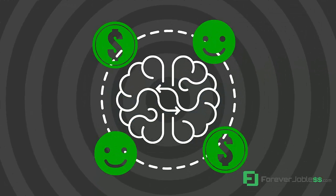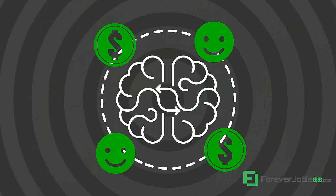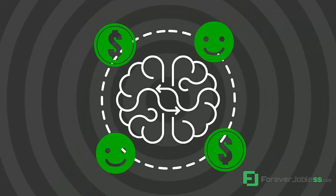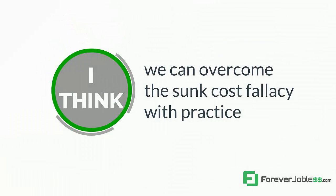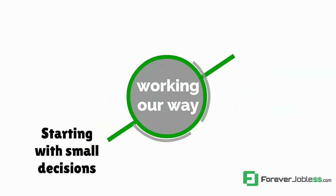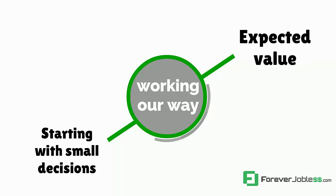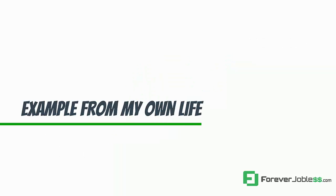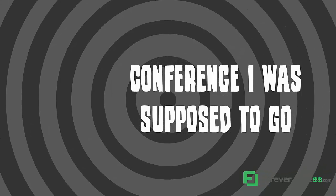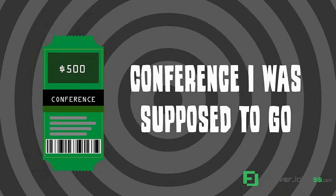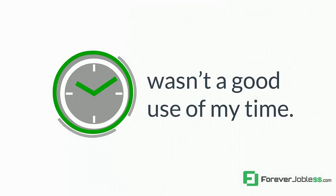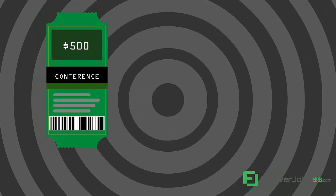It's pretty mind-boggling that we're wired in a way to make suboptimal decisions even when we know exactly what we want. I think we can overcome the sunk cost fallacy with practice, starting with small decisions and working our way up to where it's natural for us to think in terms of expected value instead of being influenced by sunk cost bias. Let me give you an example from my own life where I practiced not falling victim to sunk cost fallacy with a conference I was supposed to attend. There was a conference I was supposed to go to that I'd purchased a ticket for a while back, but decided it wasn't a good use of my time anymore. So I threw the $500 conference ticket in the trash.